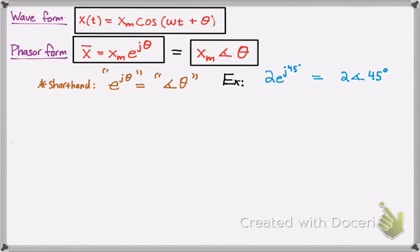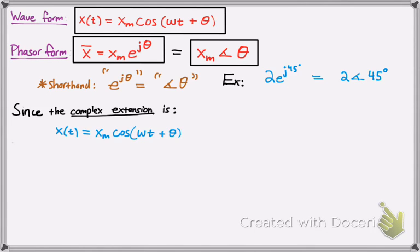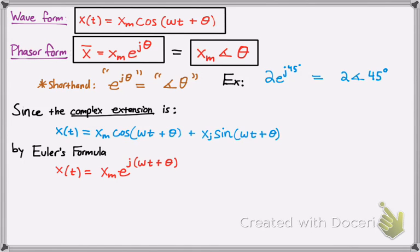So the complex expression of the waveform is such that you have your real component and then your imaginary component. But this is by Euler's formula. You can say that cosine x plus i sine x is e to the jx. So that's how you got this expression here.